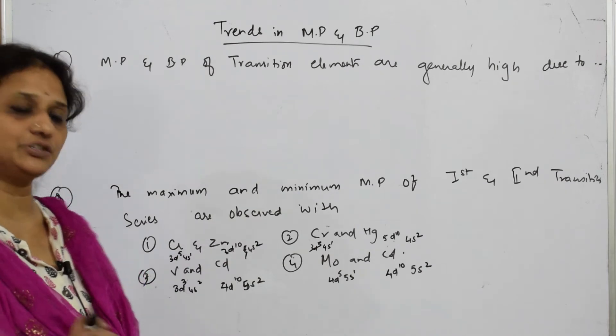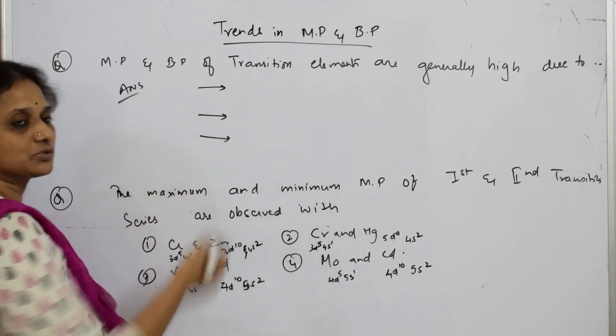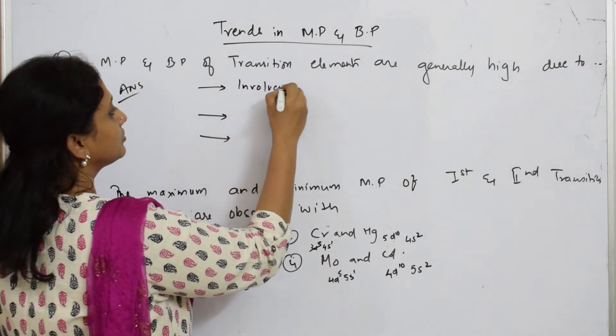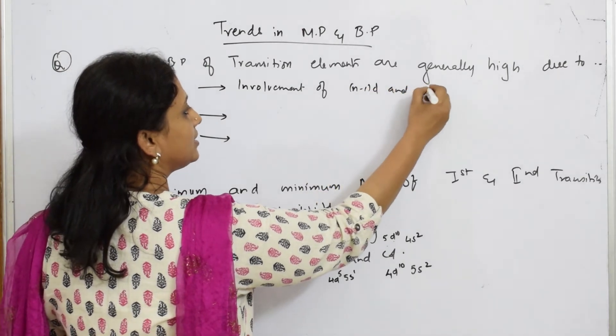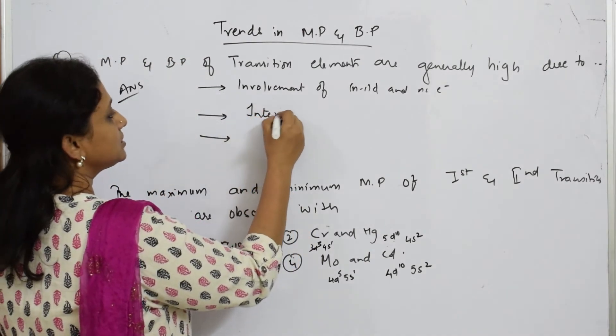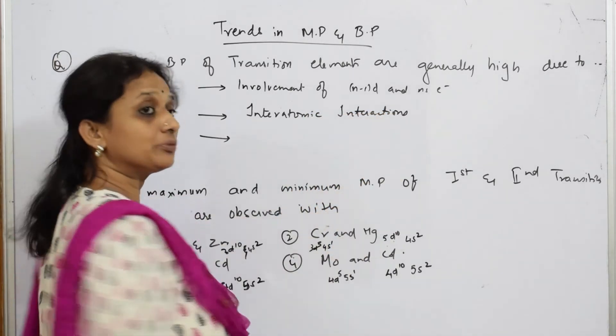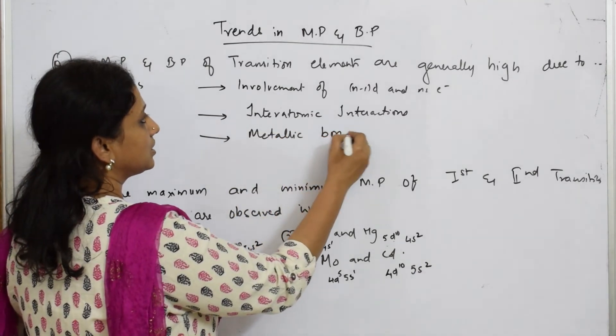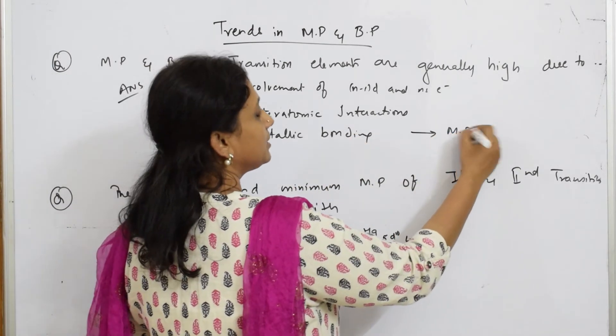MP and BP of transition elements are generally high due to - write it in three ways, three arrows or bullets. First important thing: involvement of n-1 d and n s electrons. Because of this involvement, inter-atomic interactions are formed. This inter-atomic interaction leads to metallic bonding, and because of this metallic bonding, high MP and BP.